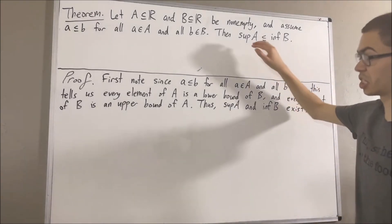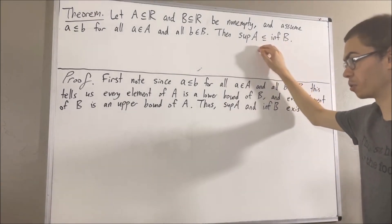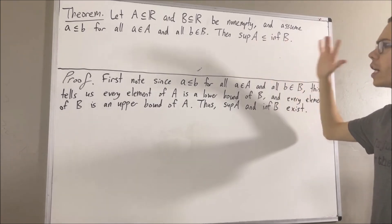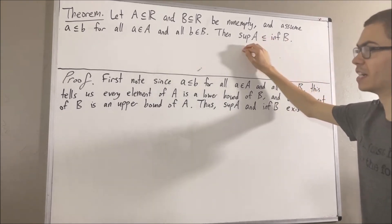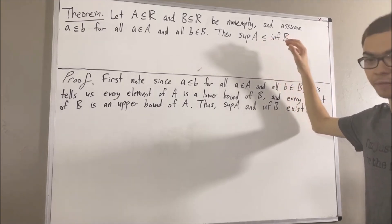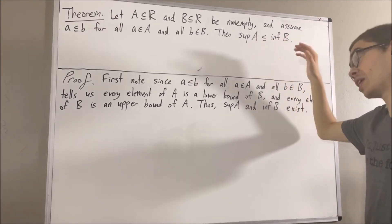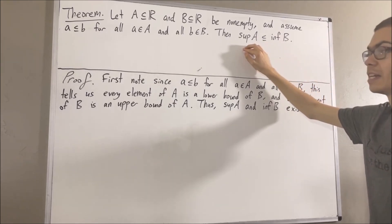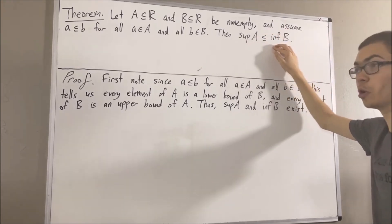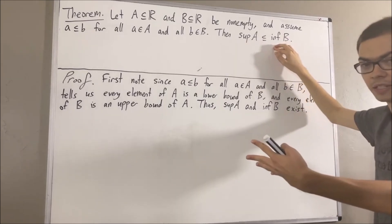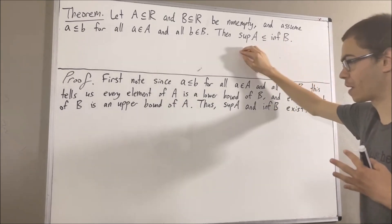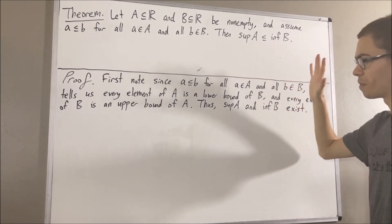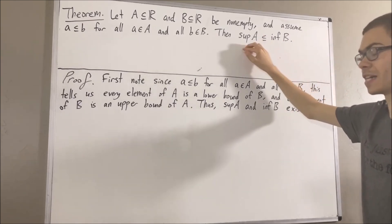But now, we want to show that the supremum of A is less than or equal to the infimum of B. To do that, all we need to show is that the supremum of A is a lower bound of B. Because if the supremum of A is a lower bound of B, and the infimum of B is the greatest lower bound of B, it will follow that the supremum of A is less than or equal to the infimum of B.